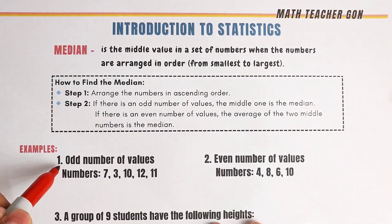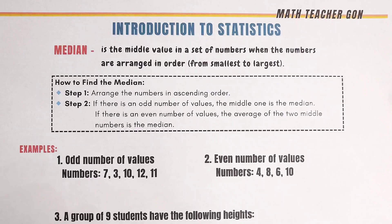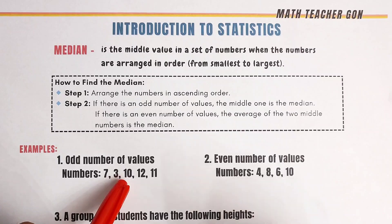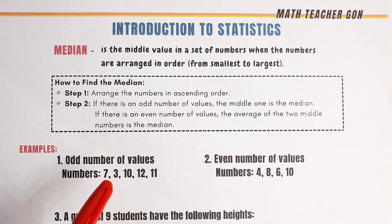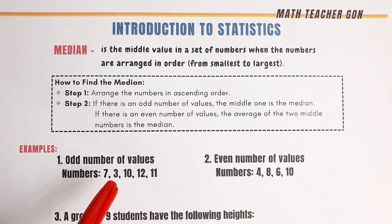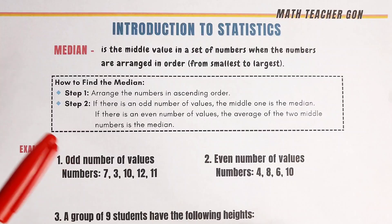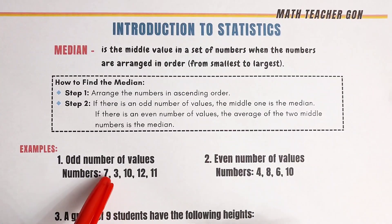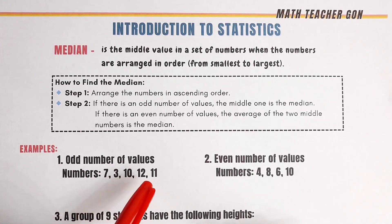Let us have example number 1 and example number 2. The first condition is odd number of values — for instance, if we have values 3, 7, 10, 11, 12, that is 5 numbers: 1, 2, 3, 4, and 5, which is an odd number.